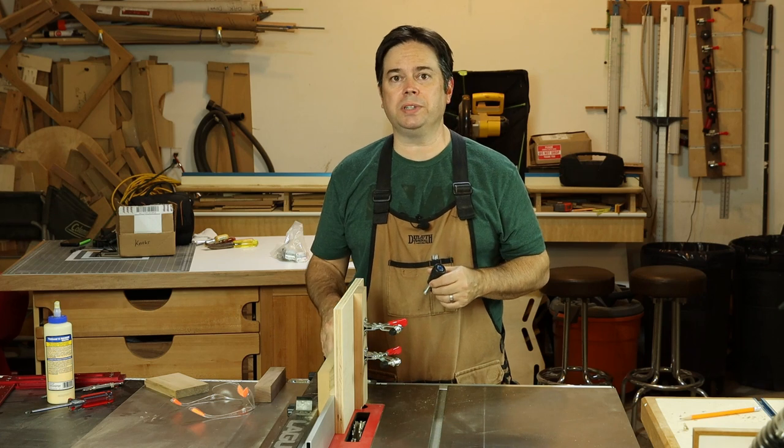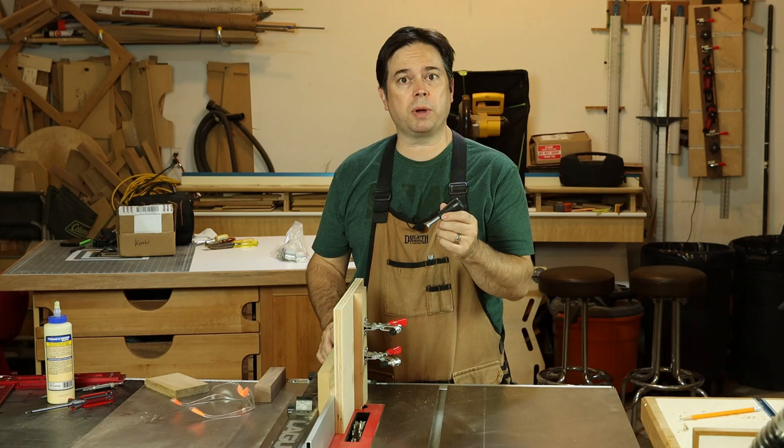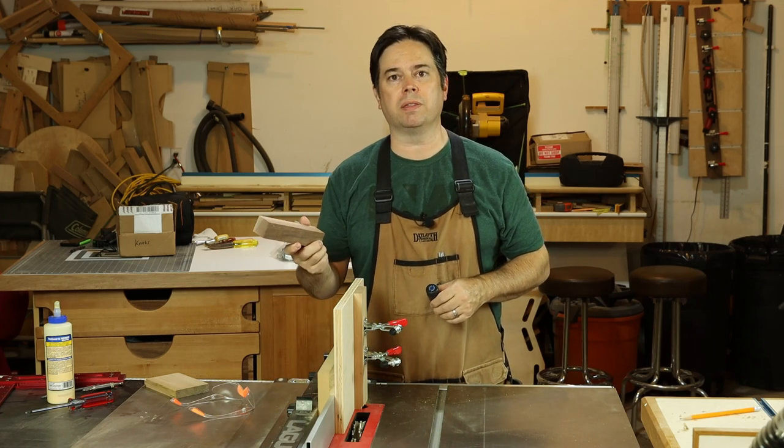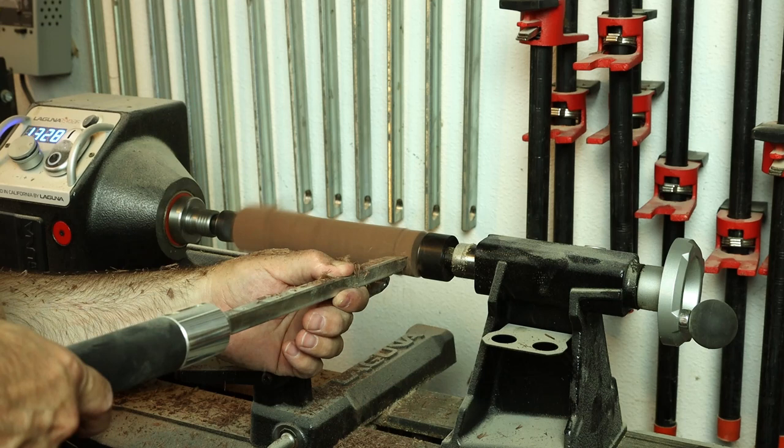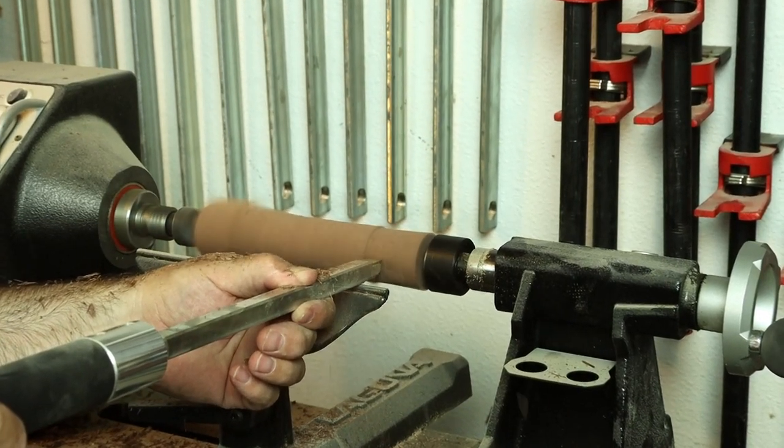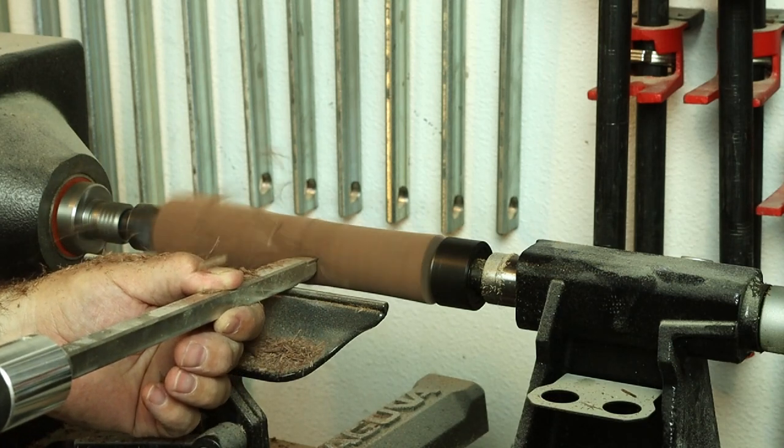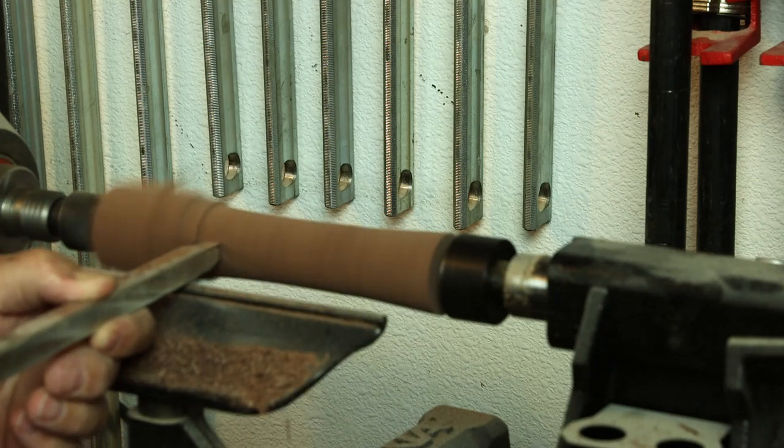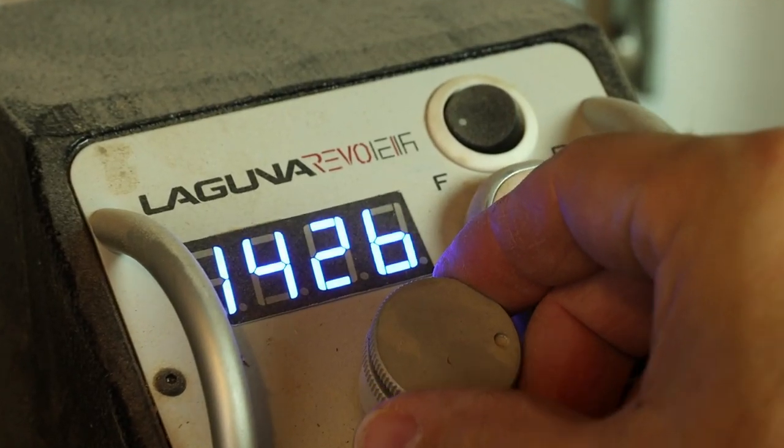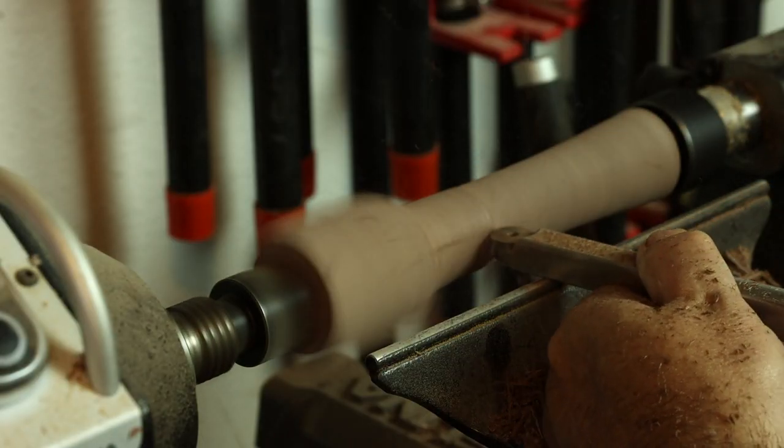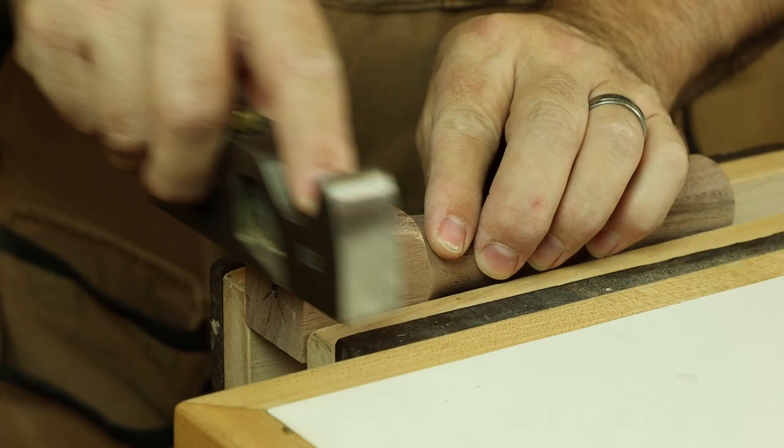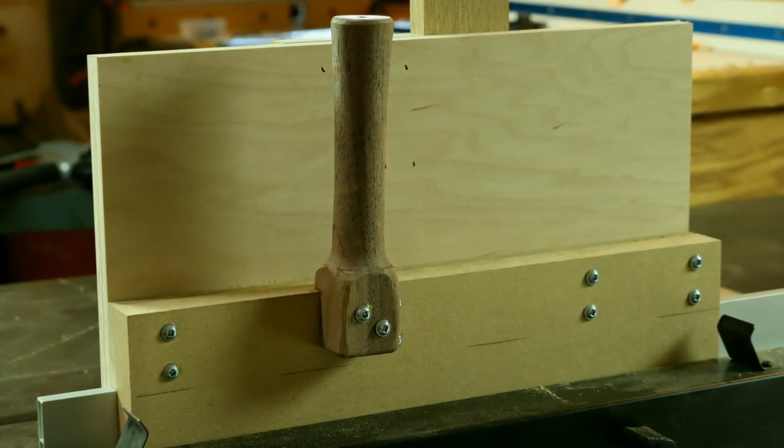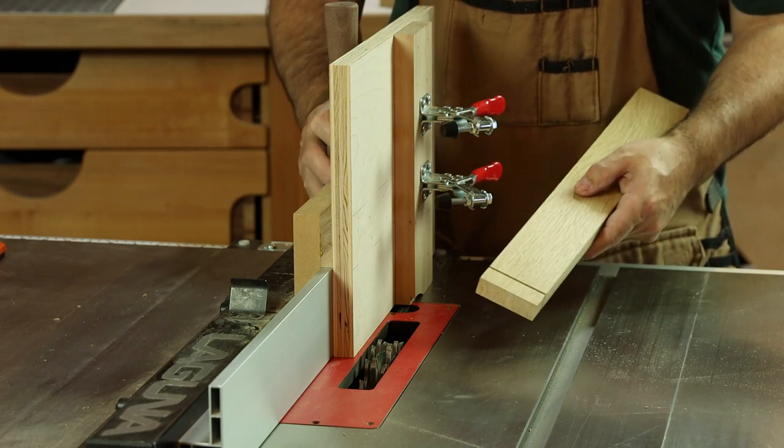So we need a little handle for the back of the jig so we can make safe controlled tenon cuts. Should we use a store-bought handle or should we get a nice chunk of walnut and go over to the lathe? I think you already know the answer to that. So now that we have the handle and the toggle clamps all installed I think we're ready to go.